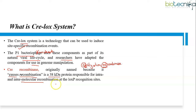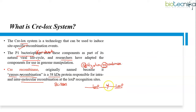CRE recombinase is an enzyme that works like scissors to cut out a gene that is between two target sequences called LOX-P sites. The target gene present between the two LOX-P sites is cut by CRE recombinase. This enzyme is expressed only in certain cell types, so the targeted gene is knocked out only in those cells and only when the researcher wants. A key advantage is that CRE acts independently of any accessory proteins or cofactors, allowing for broad applications.